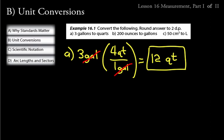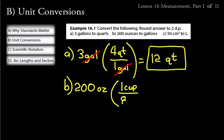B: Convert 200 ounces to gallons. Write down what's given first: 200 oz. Looking at the equivalent measures, 1 cup equals 8 ounces, 4 cups equal 1 quart, and 4 quarts equal 1 gallon — so we use three unit multipliers. First: 1 cup over 8 ounces. Cancel the ounces. Then: 1 quart over 4 cups. Then: 1 gallon over 4 quarts. Cancel cups and quarts, leaving gallons.